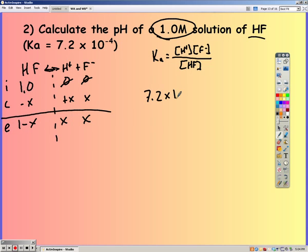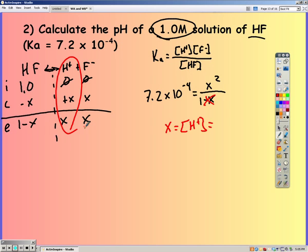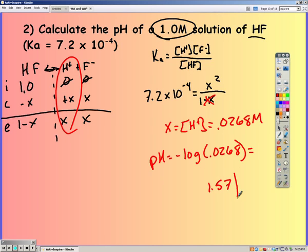Plug it into our Ka expression. Notice we have a different Ka, because we have a different acid. We can still ignore the minus X, because it's still a weak acid. Solving for X, or my concentration of H, I get 0.0268 molarity. Since I know my concentration of H, I can find my pH. Solving for pH, I get 1.57.